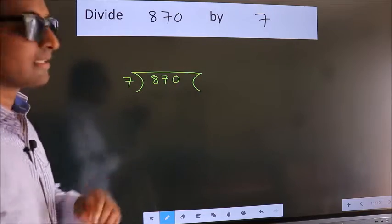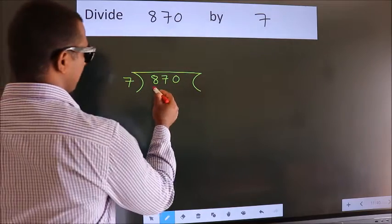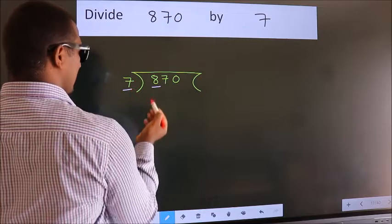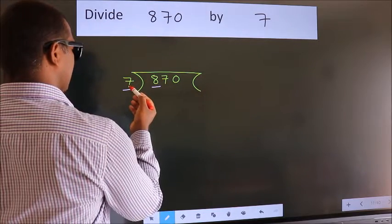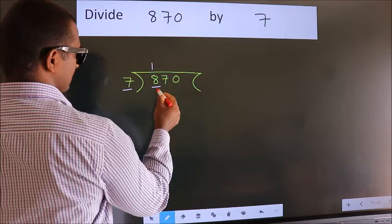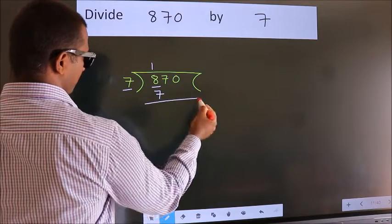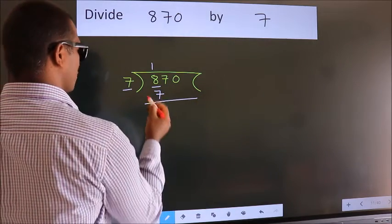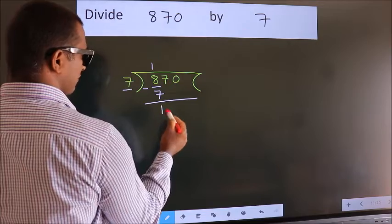Next, here we have 8, here 7. A number close to 8 in the 7 table is 7 once, which is 7. Now we subtract and get 1.